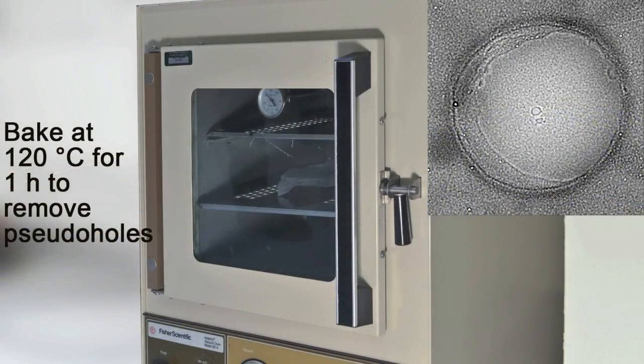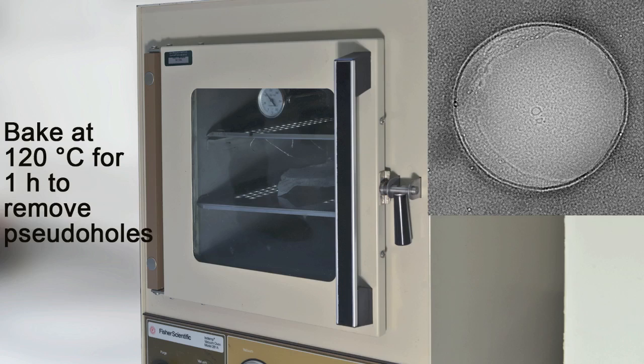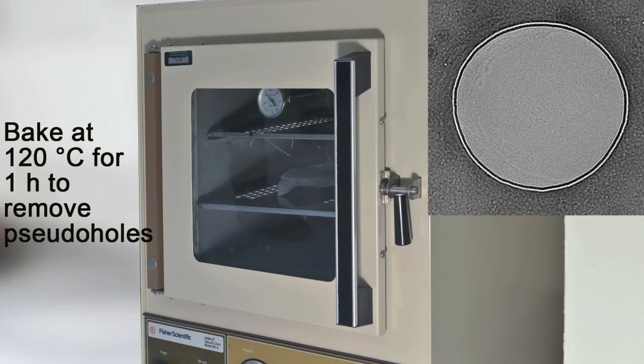Once the sample is dry, place the glass petri dish with the grids in the oven and bake at 120 degrees for about one hour to perforate pseudo-holes.